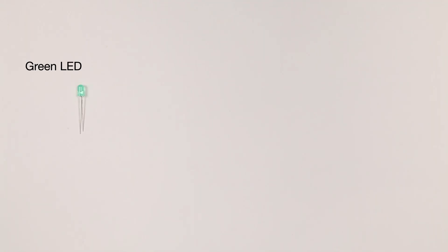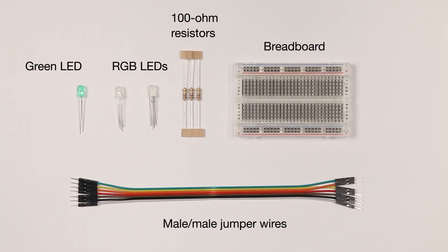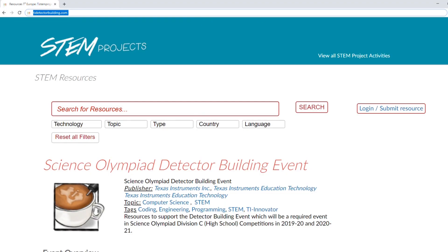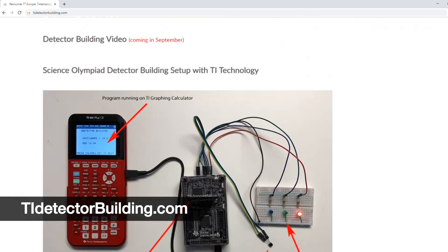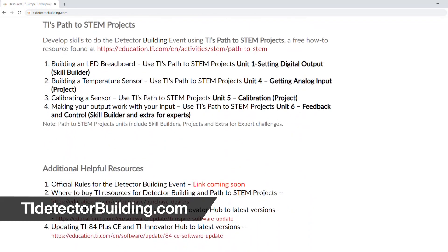One green LED, two RGB LEDs used for red and blue, three 100 ohm resistors, one breadboard, and seven male-to-male jumper wires. To learn how to build and wire the 3 LED breadboard, go to TIDetectorBuilding.com and click on Path to STEM Projects.